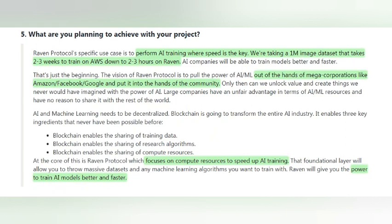Raven Protocol was built to enhance AI training where speed is the key. They are taking a 1M image dataset which takes about 2-3 weeks to train on Amazon Web Services down to around 2-3 hours on Raven — yes, that's a revolutionary achievement in itself.